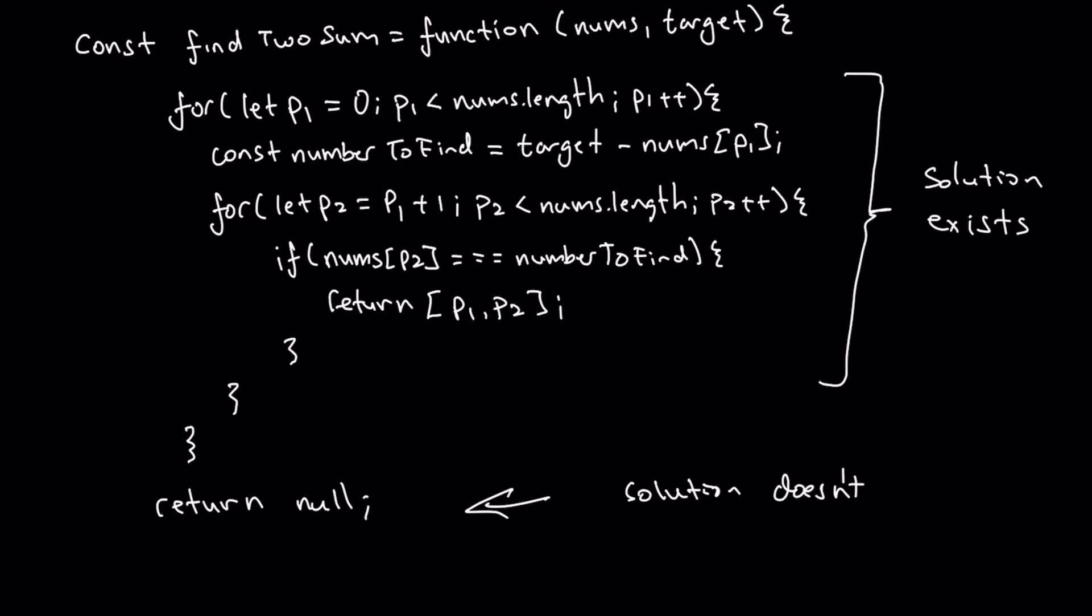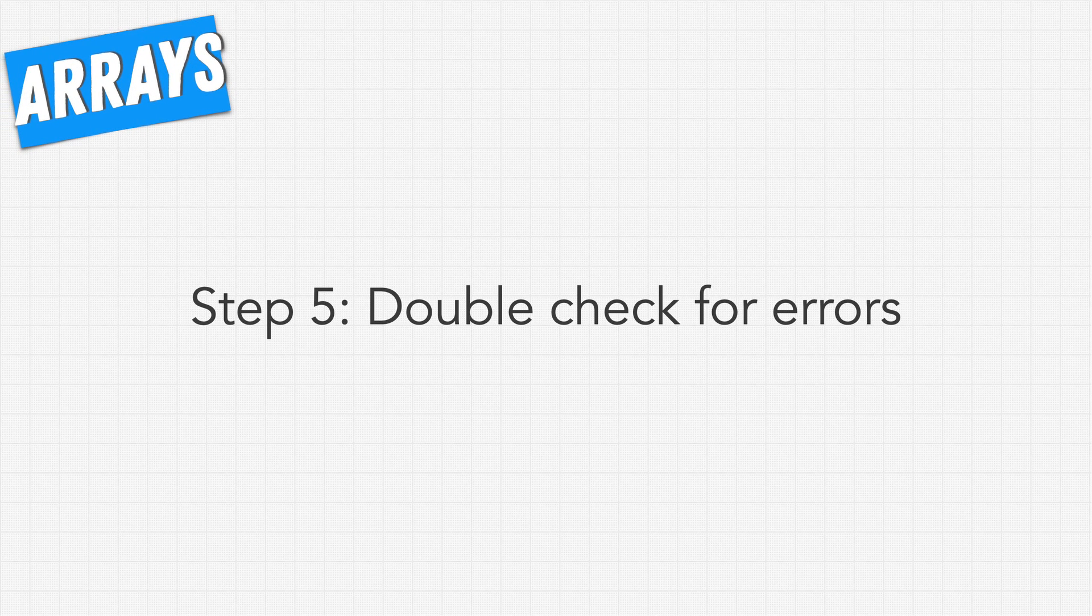Because if our code ever hits this line right here, then we know for sure there's no solution. So solution doesn't exist, but we still want to make sure we return something. And this line will only run after our entire for loop has run, we've compared every pair of numbers possible, and that is our solution.